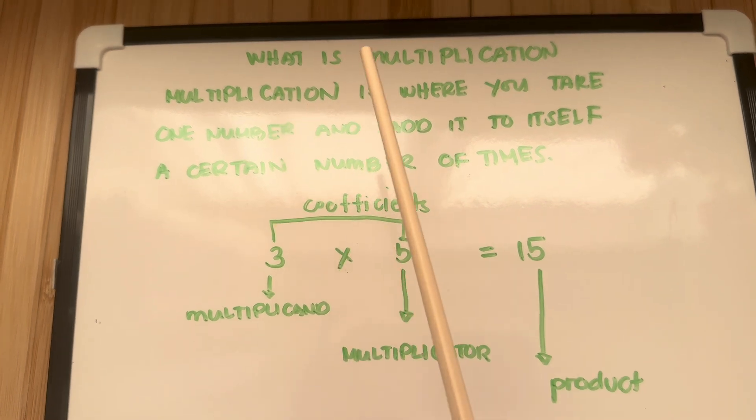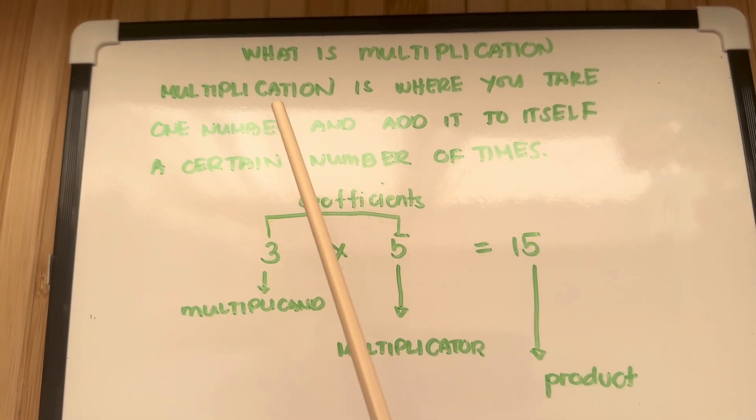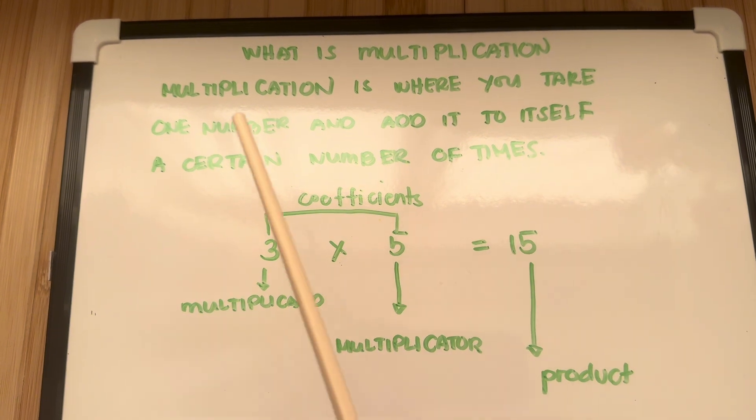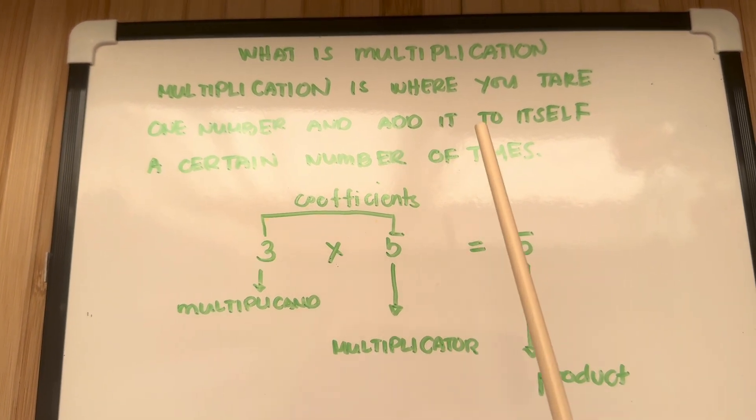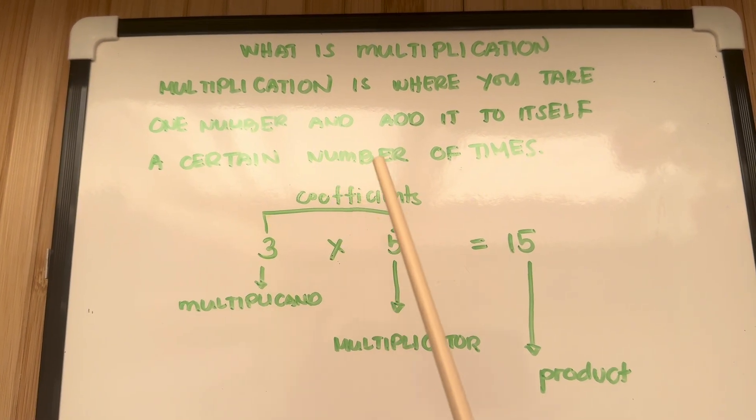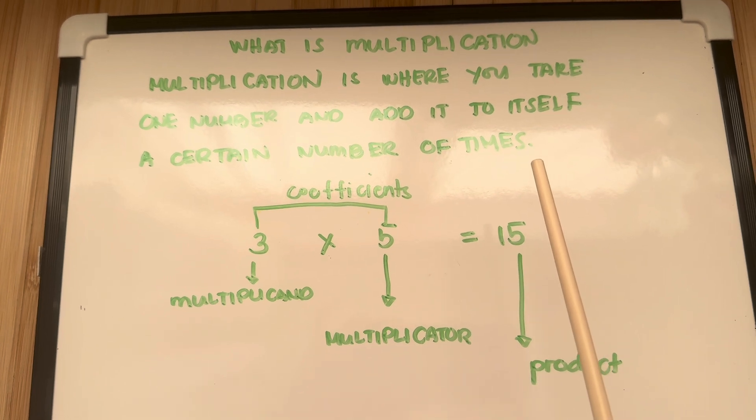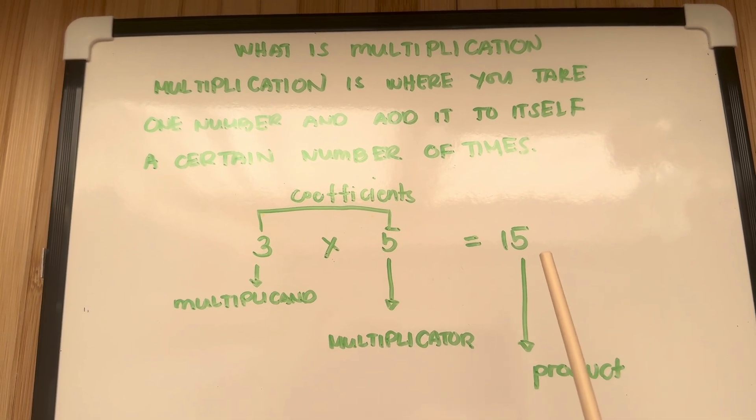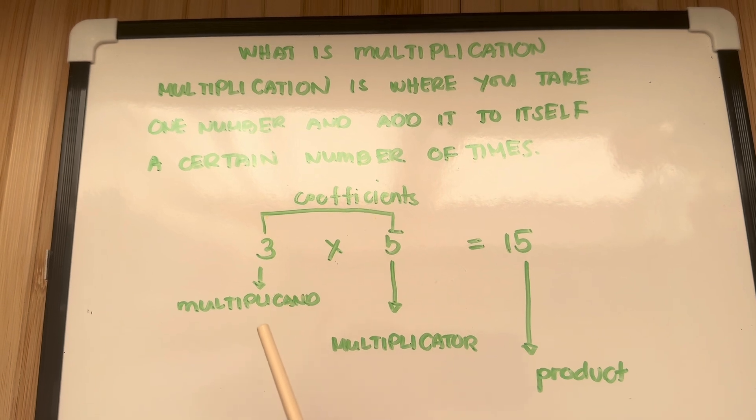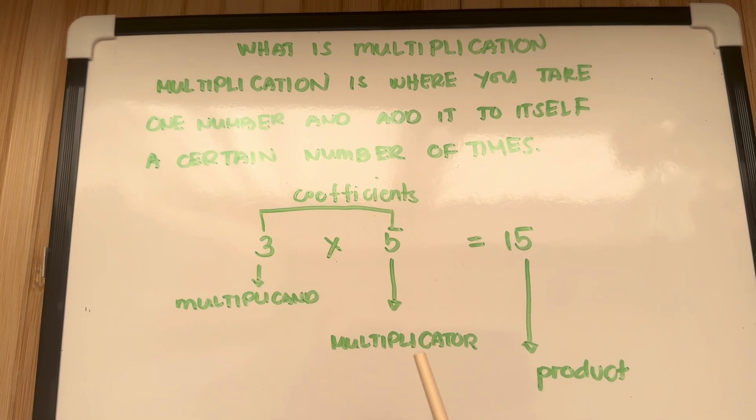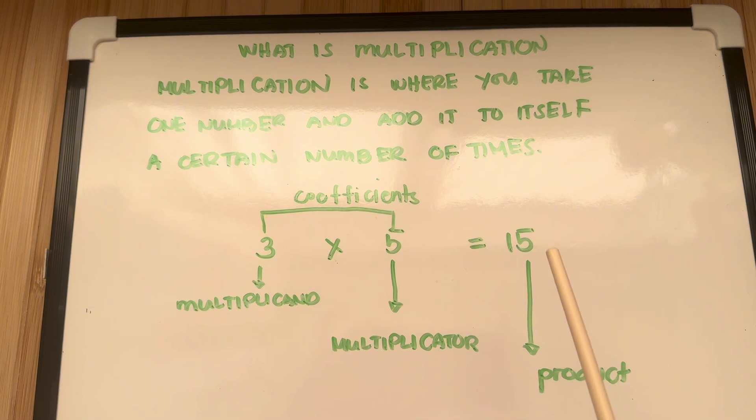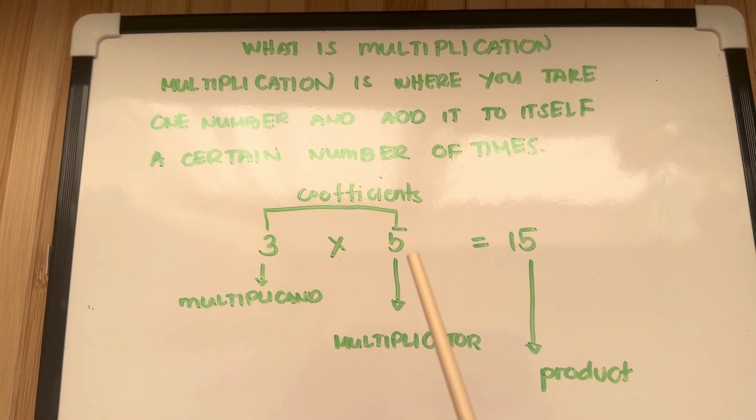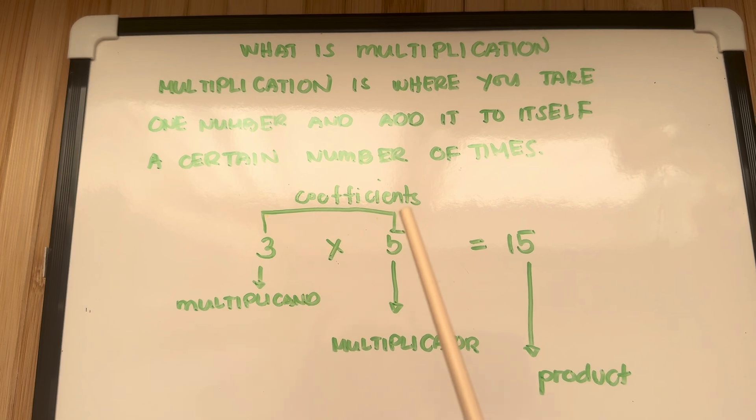And now, let's define what is multiplication. Multiplication is where you take one number and add it to itself a certain number of times. Example, 3 times 5 is equals to 15. Wherein 3 is the multiplicand and 5 is the multiplicator and 15 is the product. 3 and 5 are called coefficients.